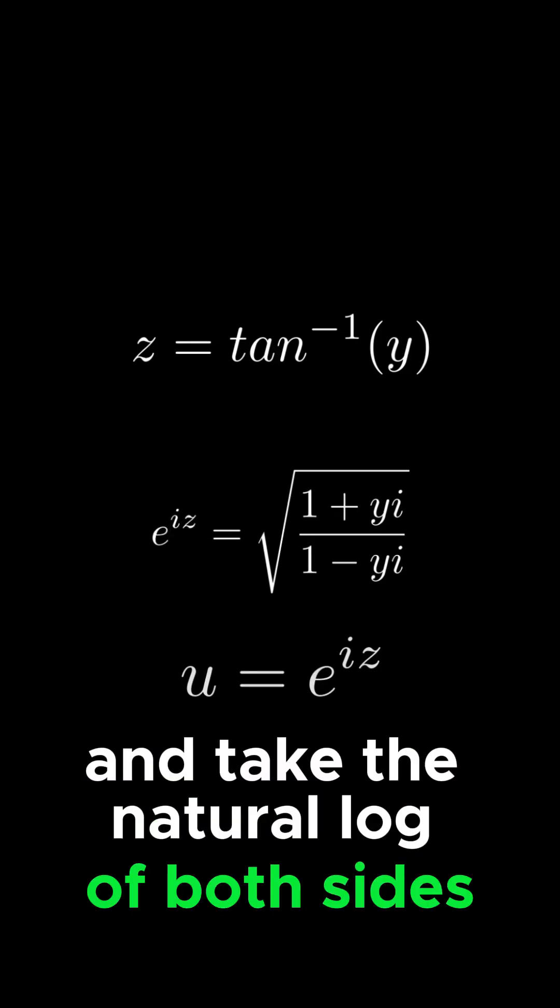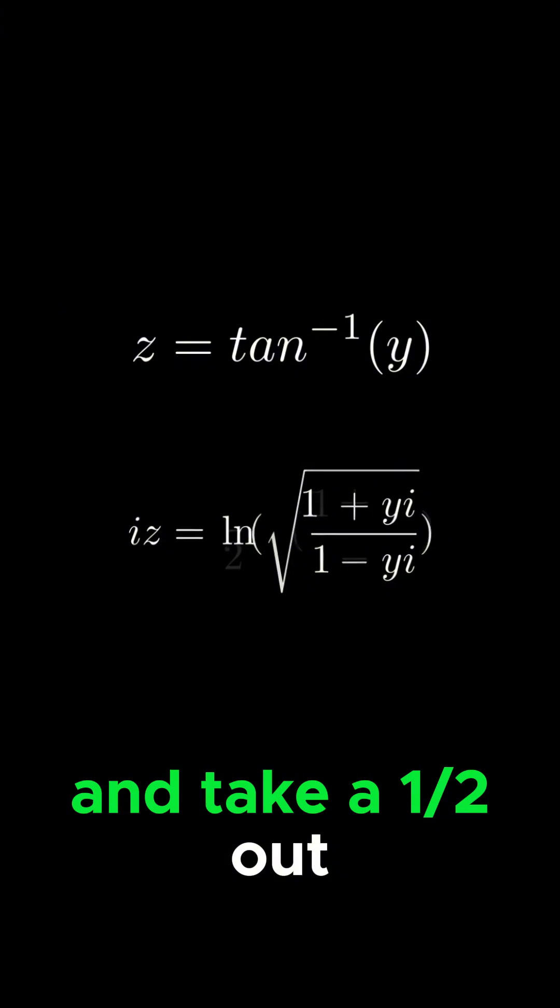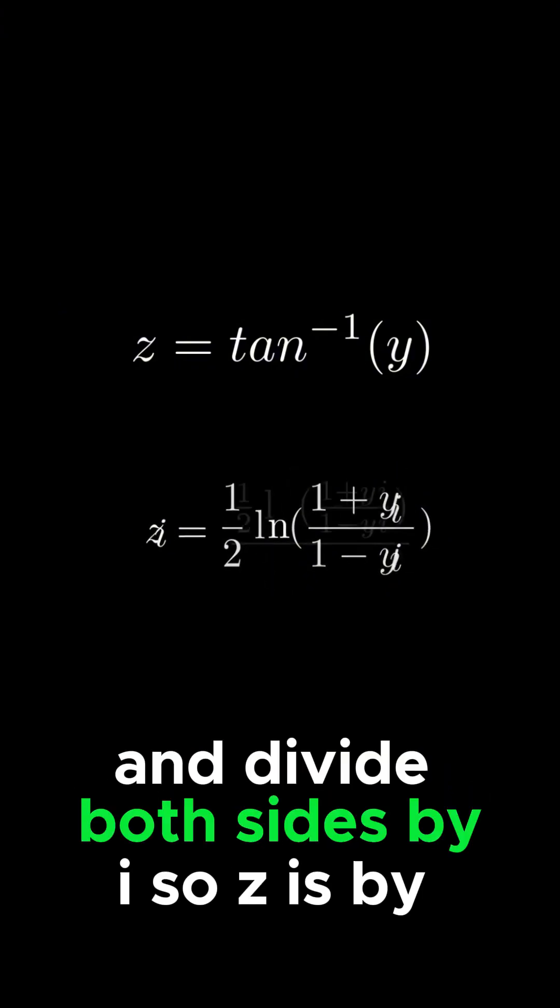Then take the natural log of both sides, then take it one half out, and then divide both sides by i, so z is by itself.